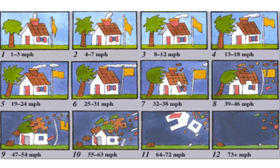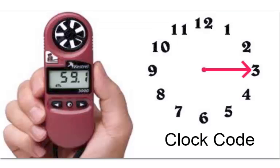You have to estimate the wind speed. A gentle breeze with leaves and small twigs constantly moving is about 10 miles per hour. Use a wind meter if you have one. Left to right is three o'clock.